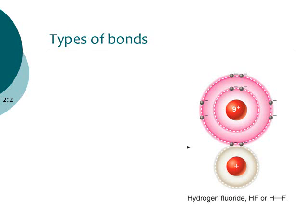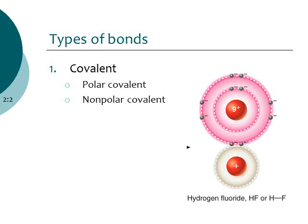These molecules and compounds are formed by atoms bonding together, and there are different types of bonds. The first type is a covalent bond — there are actually two types: polar covalent and nonpolar covalent. The second type is the hydrogen bond, which relates to polar covalent molecules. The third type is ionic bonding. We're going to start with covalent bonding first.